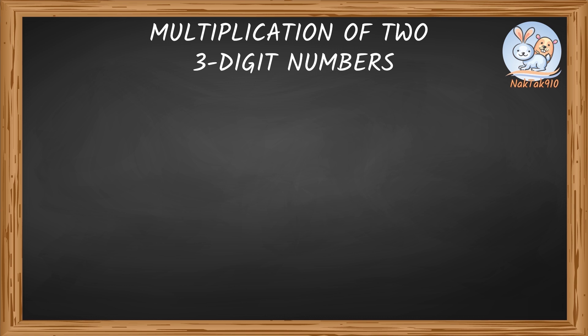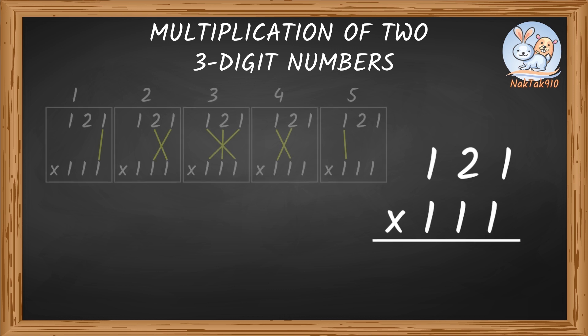We need to follow five simple steps to multiply any two three-digit numbers. Let's take an example. 121 times 111. We need to multiply in these five simple patterns. After each step, start placing the answer from right to left.